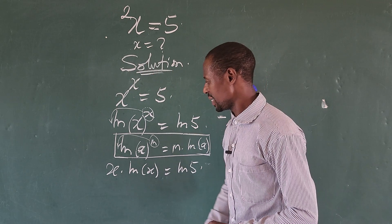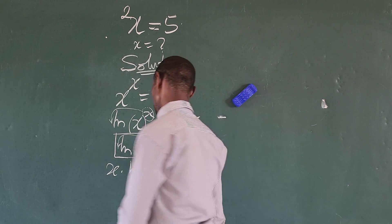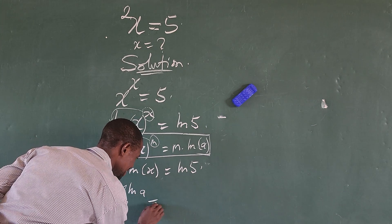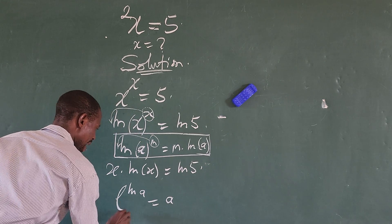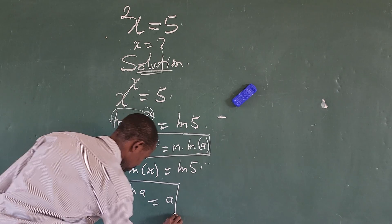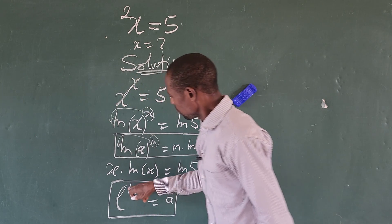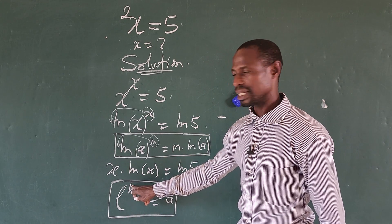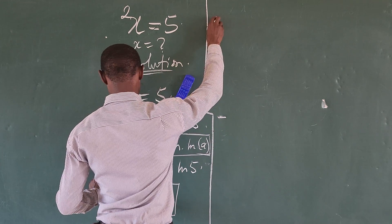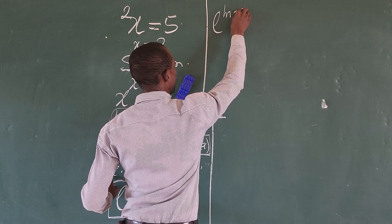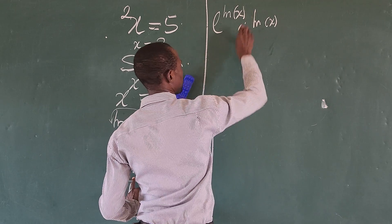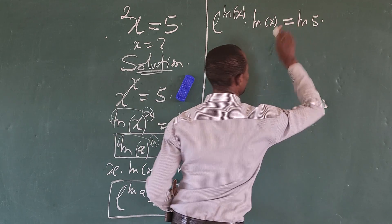What we do here is rewrite x using the identity: e raised to the power of ln(a) equals a. So we can rewrite our x as e to the power of ln(x). Substituting this in, we get e to the power of ln(x), all multiplied by ln(x), equals ln of five. This gives us something beautiful: ln(x) times e to the power of ln(x) equals ln of five.